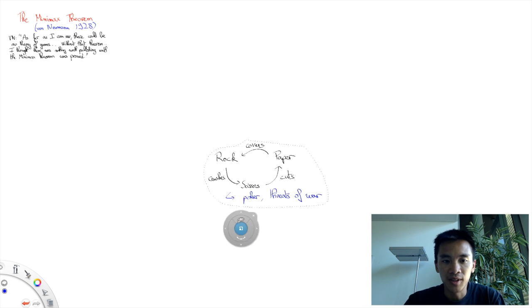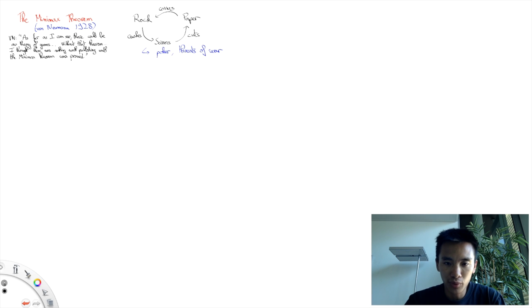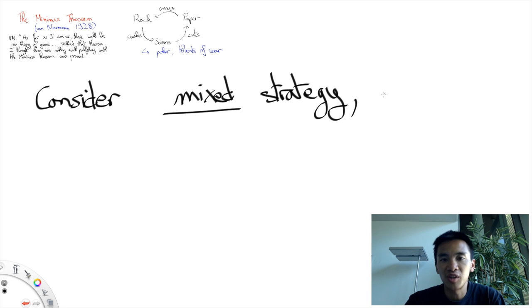To face this difficulty, von Neumann's great idea was to broaden the space of strategies in the game by considering randomized strategies, which are often called mixed strategies in game theory.